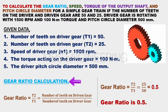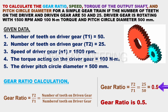We will calculate the gear ratio. The gear ratio is equal to T2 divided by T1 — that is, the number of teeth on the driven gear divided by the number of teeth on the driver gear. Applying the given data: gear ratio = 25 divided by 50. We get a gear ratio of 0.5.